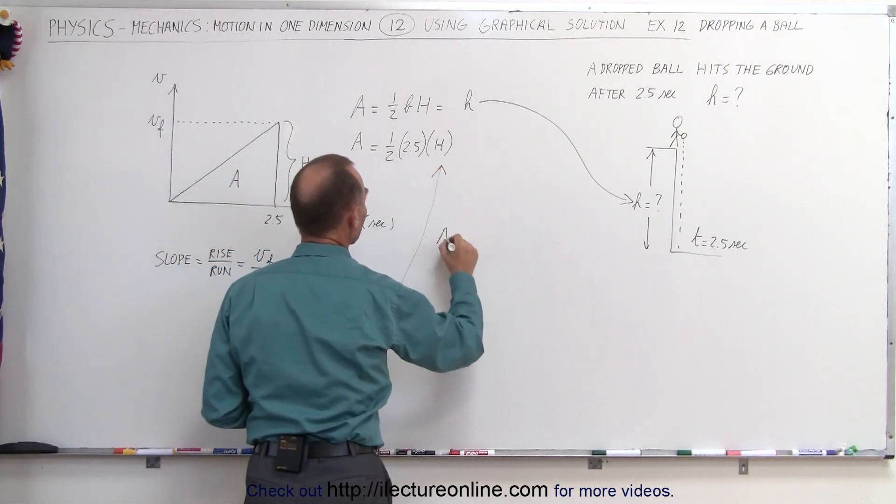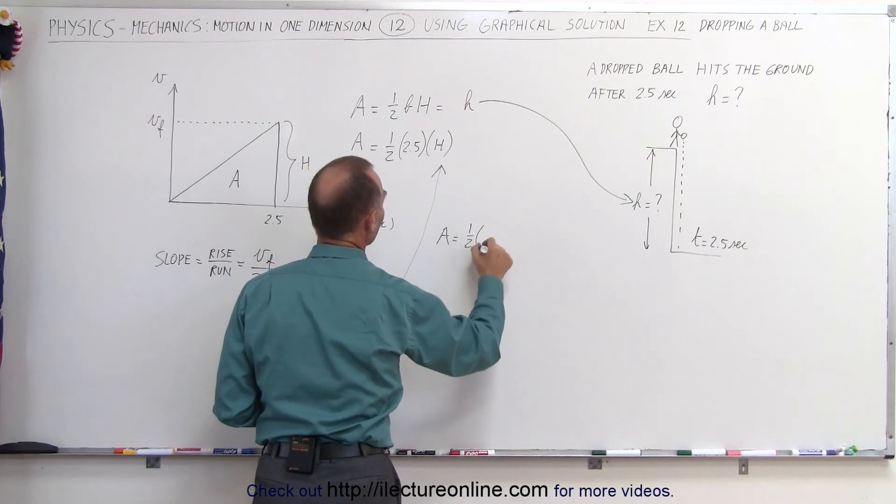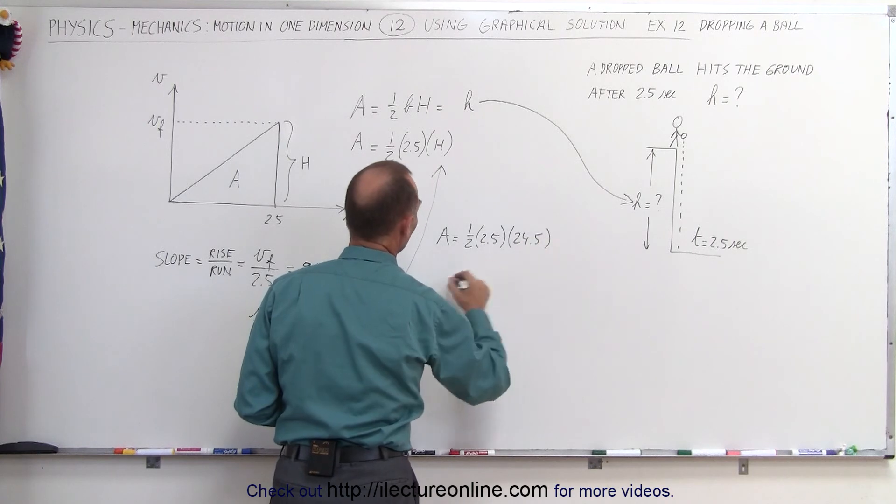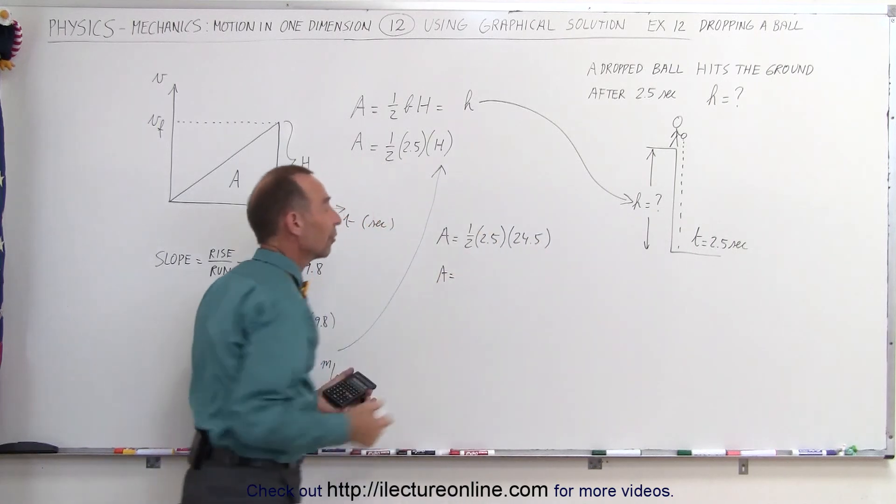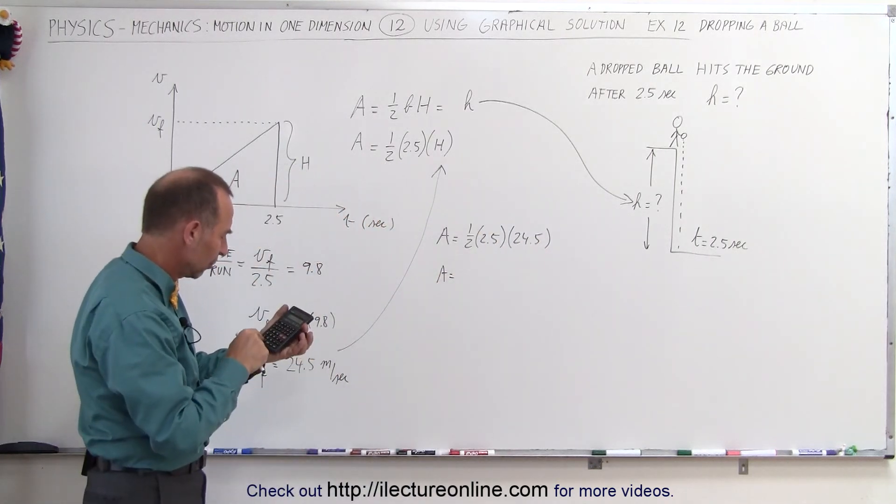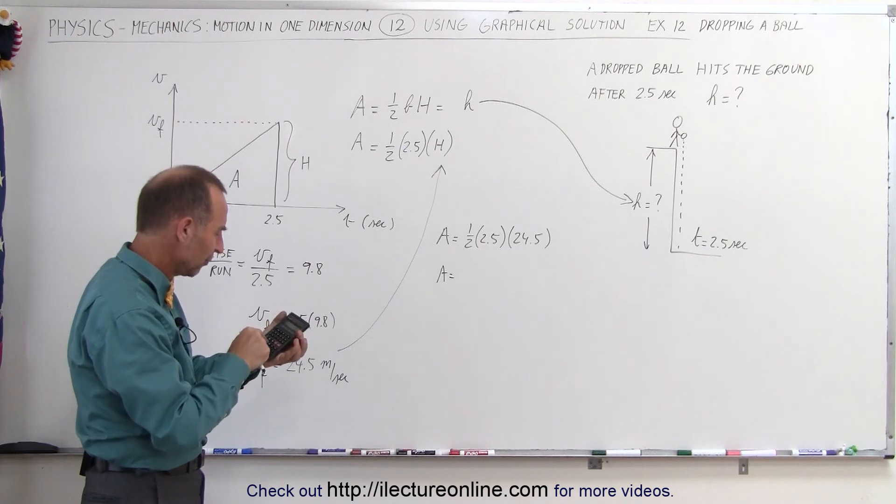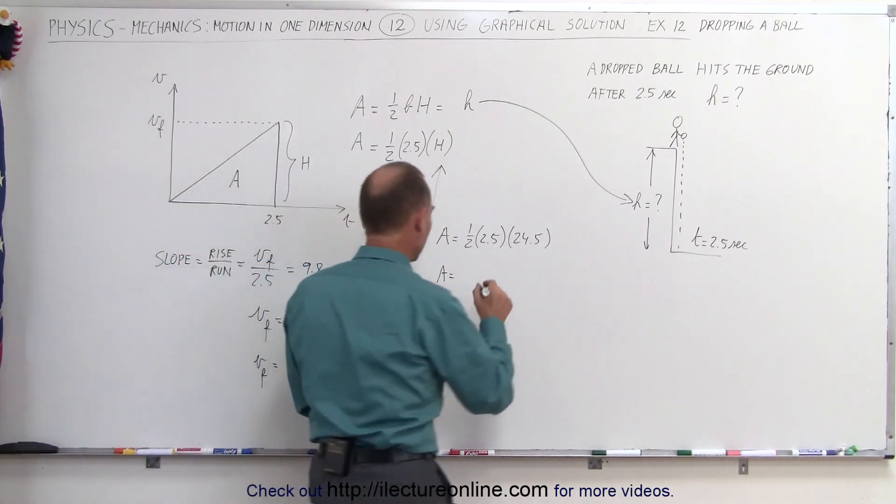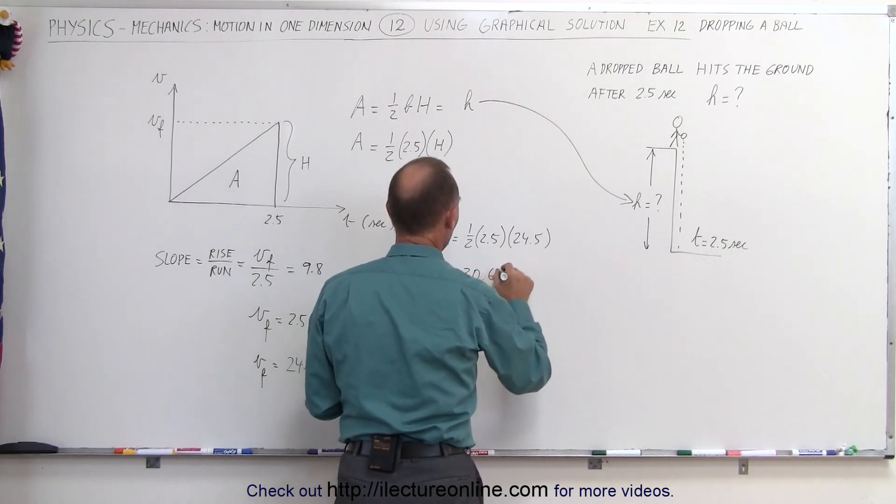So now we know that the area is equal to one half times the time, 2.5 times the height, which is 24.5. So the area, which is the height from which the ball is dropped, is equal to 0.5 times 2.5 times 24.5 which equals 30.6 meters.